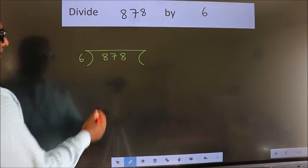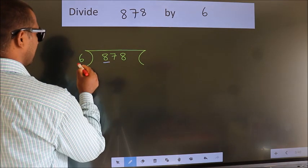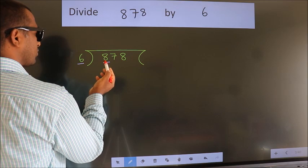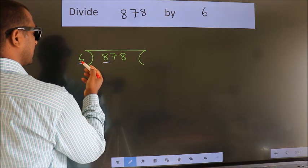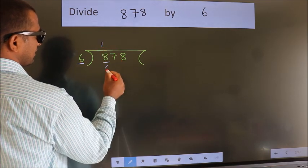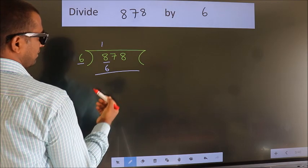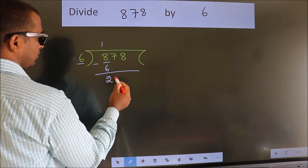Next, here we have 8, here 6. A number close to 8 in the 6 table is 6 times 1, which is 6. Now we should subtract. We get 2.